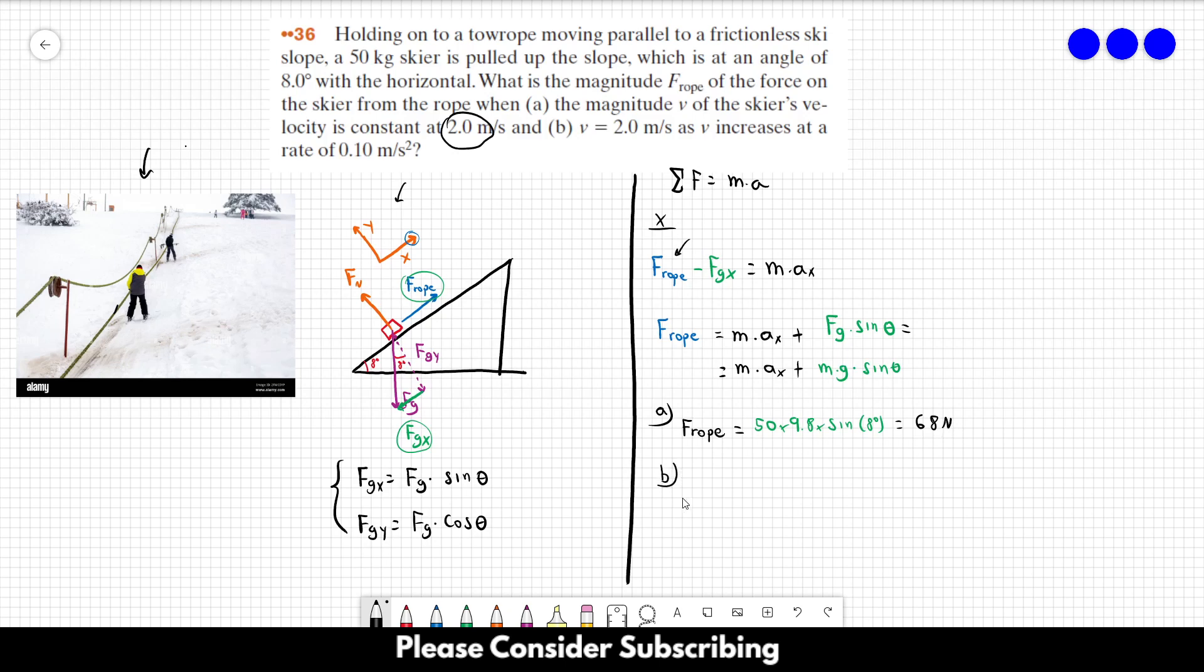For letter b, we are going to do the same thing. However, in this case, the acceleration is not zero. We have the mass, which is 50, the acceleration, which is 0.1, plus this number, which is the same, right? 68. So this would be 73 newtons. And that's the answer of this exercise.